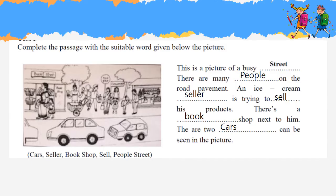This is a picture of a busy street. There are many people on the road. An ice cream seller is trying to sell his products. There is a bookshop next to him. There are two cars that can be seen in the picture.